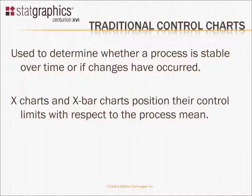A traditional control chart is used to determine whether a process is stable over time, whether it's operating at a constant mean and standard deviation. You can have a process that's in a state of statistical control but producing a lot of product that's unacceptable beyond the specification limits.